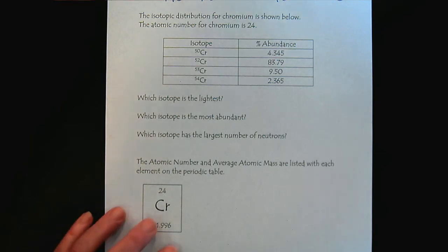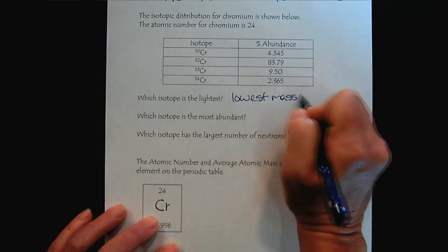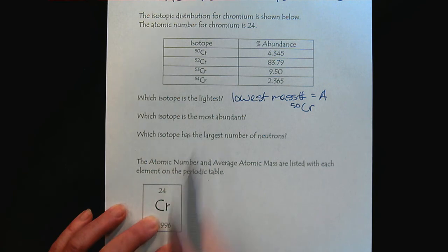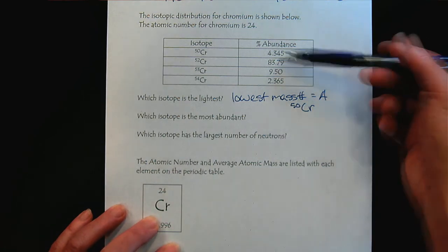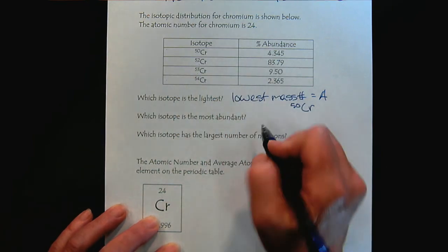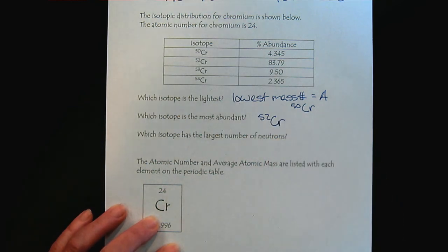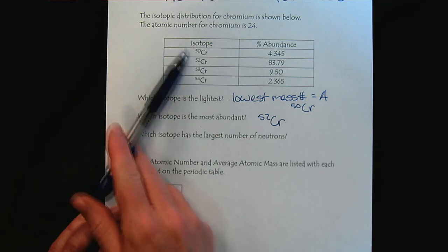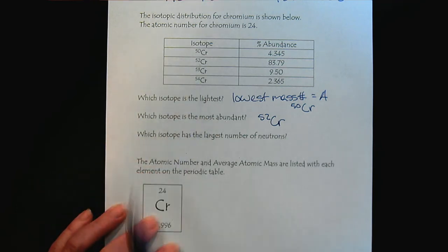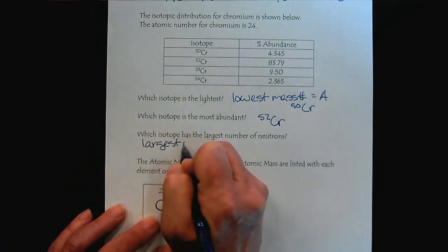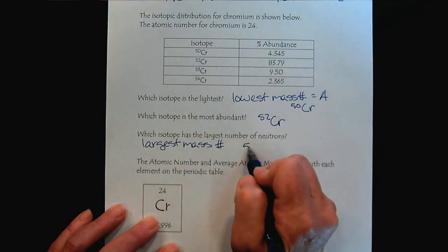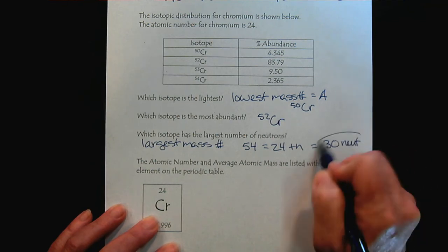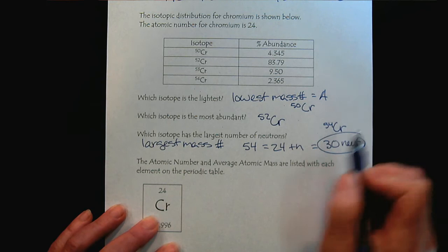So which isotope is lightest? The lightest element is going to have the lowest mass number. So that would be chromium-50. Which isotope is the most abundant? We just simply look over here at the abundance and we see that chromium-52 is definitely the most abundant. Which isotope has the largest number of neutrons? Because the atomic number is fixed, the largest number of neutrons will be the element with the largest mass number. So we see here with chromium-54 that there are the 24 protons plus neutrons. So we would have 30 neutrons. And that would be chromium-54. So that would be the answer to the last question.